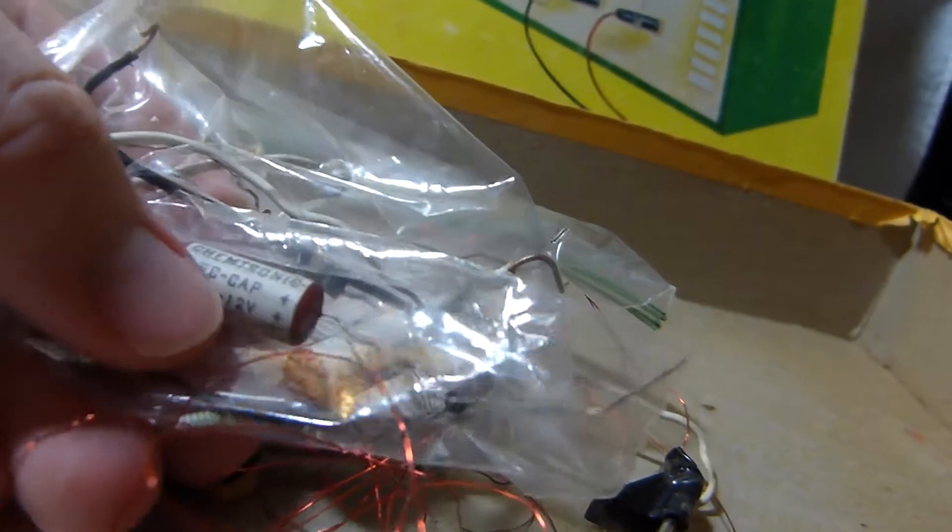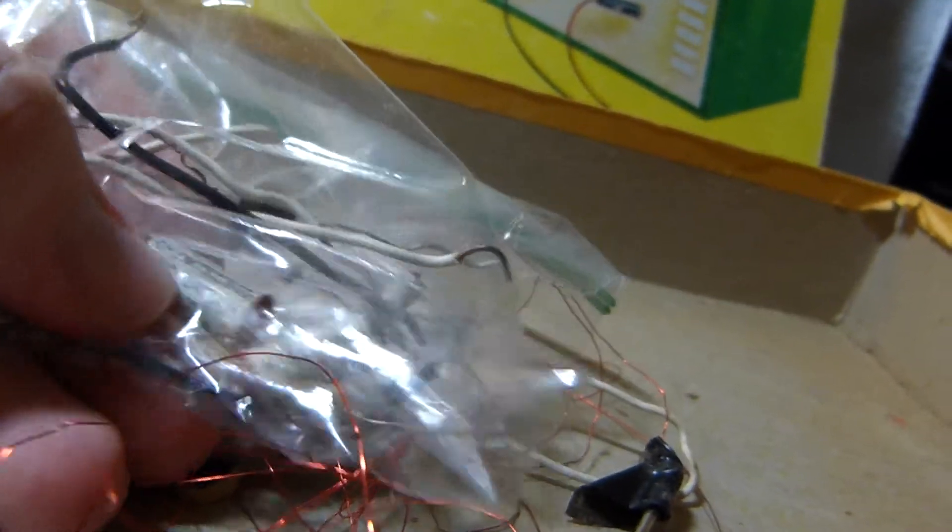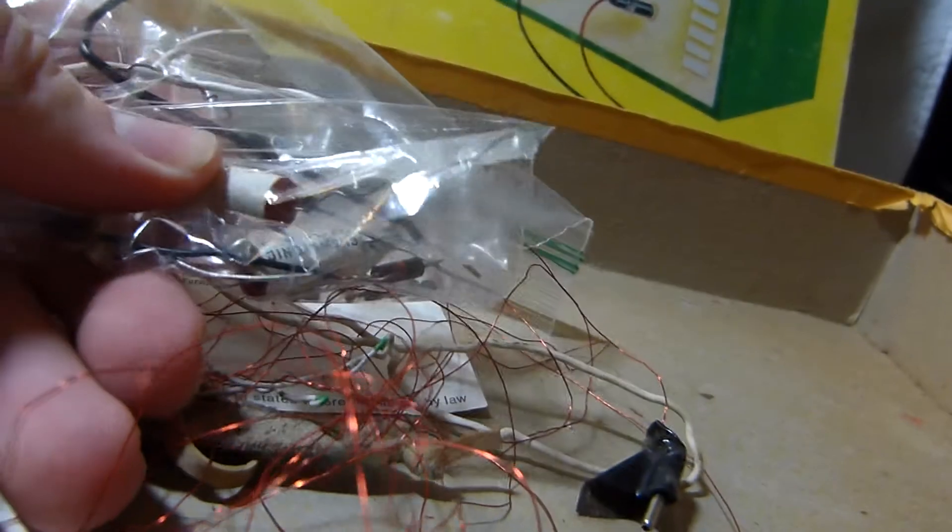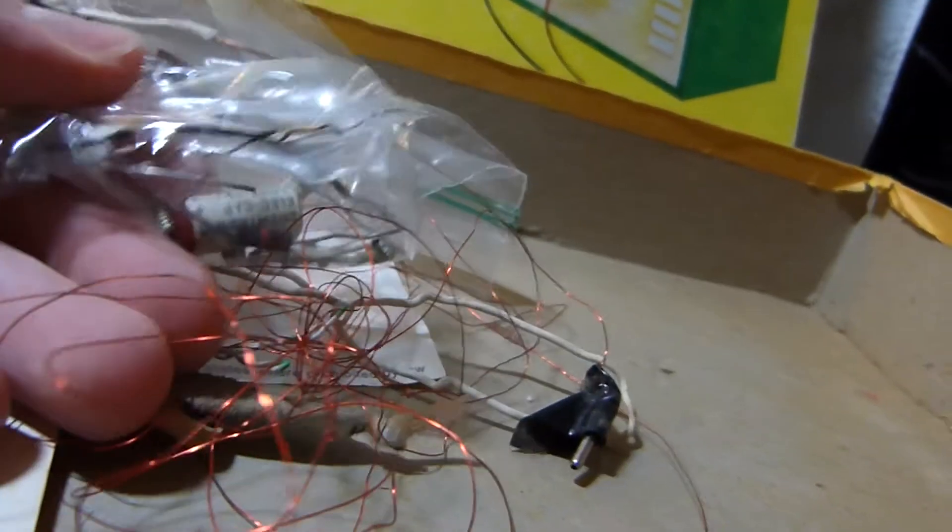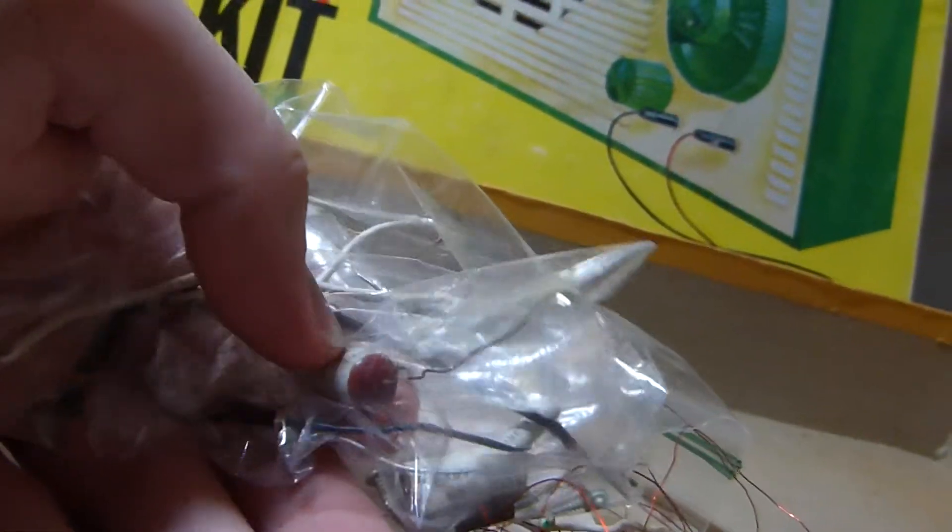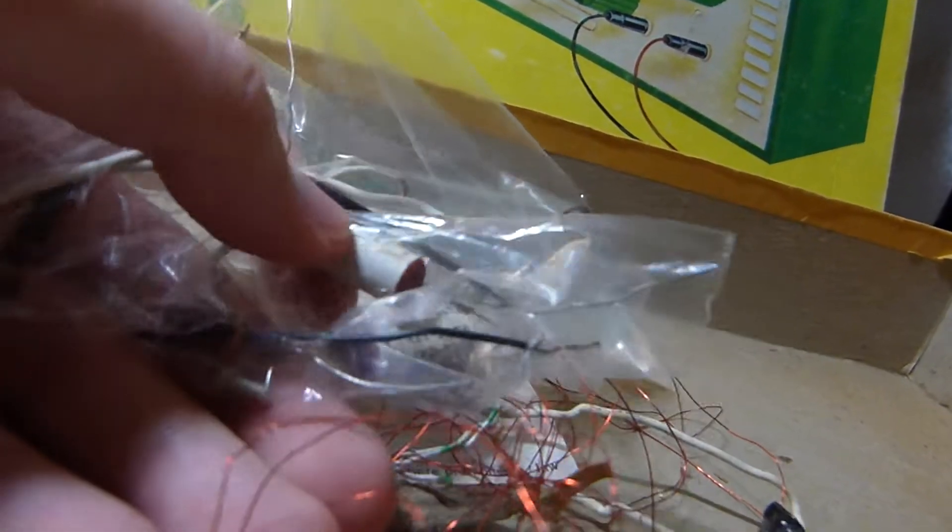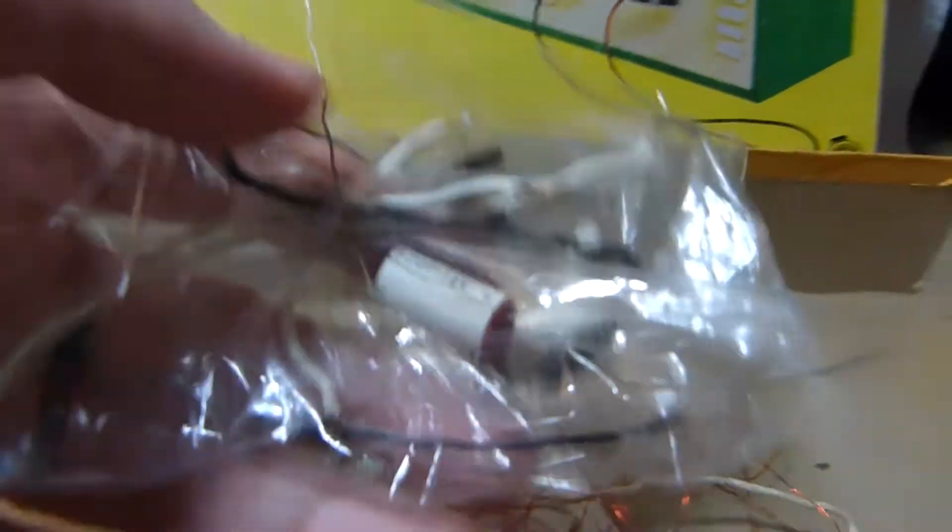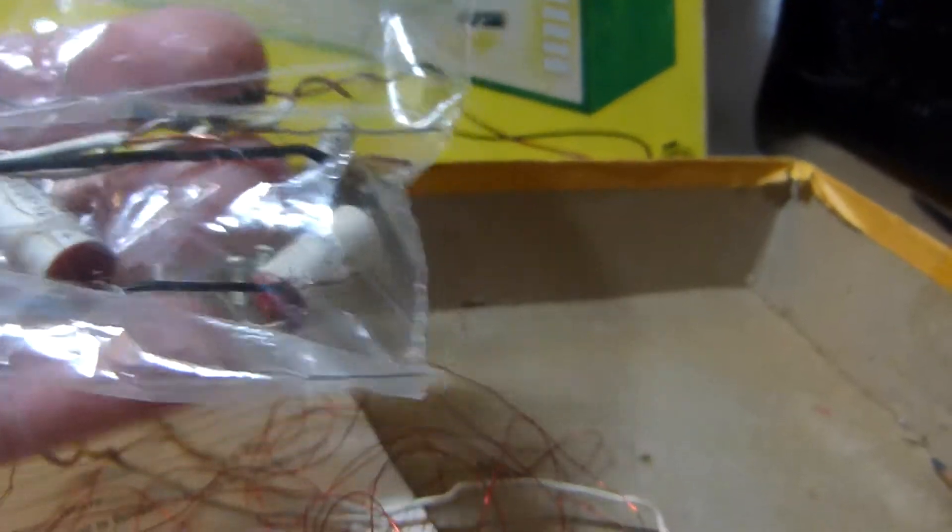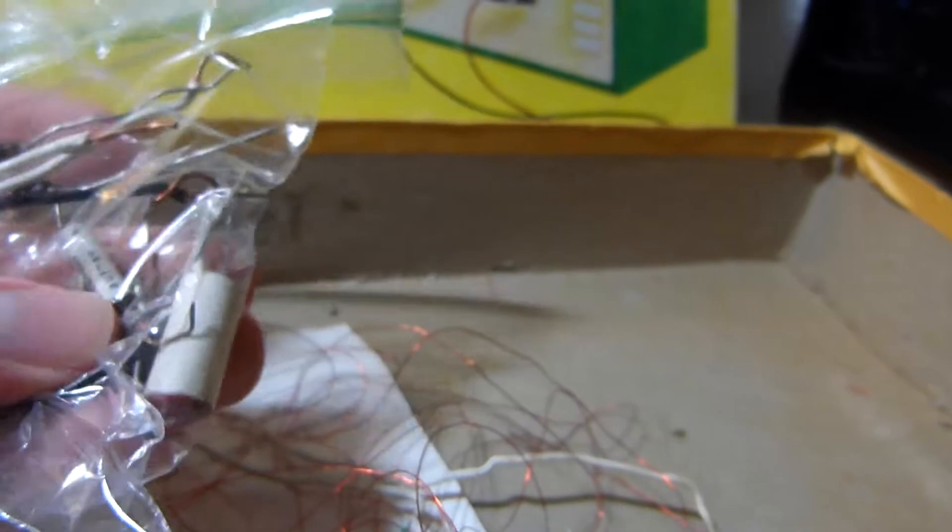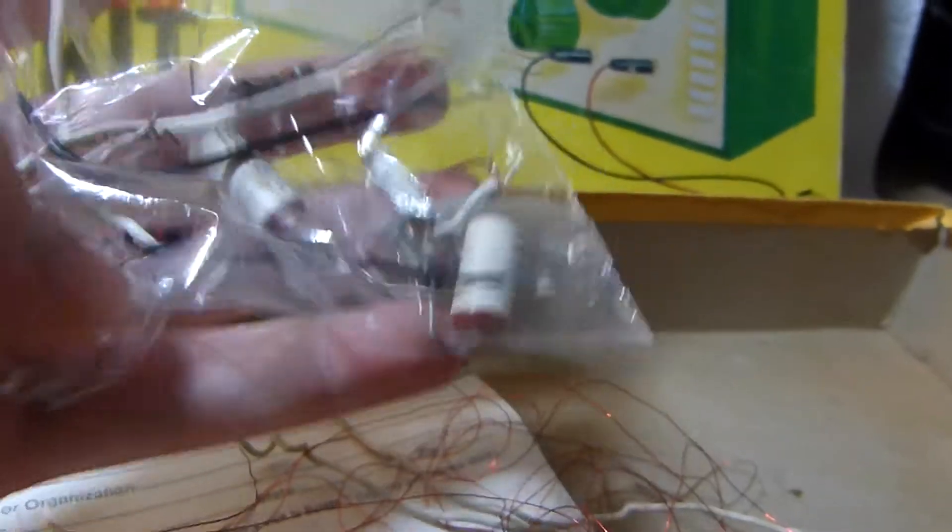These ceramic style electrolytics are almost always failed. I think that the epoxy or whatever on the ends of these things expands over time and cracks the cases, which lets the electrolyte dry out. I'll show you what those screws are for in a bit. For some reason there's quite a few extras, and no, I didn't just forget to install them.